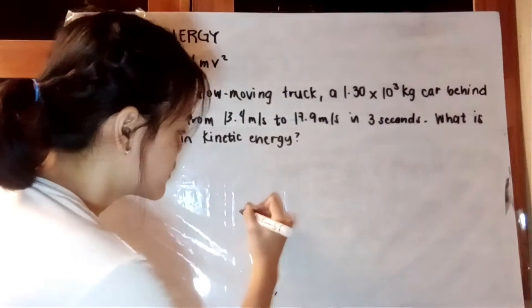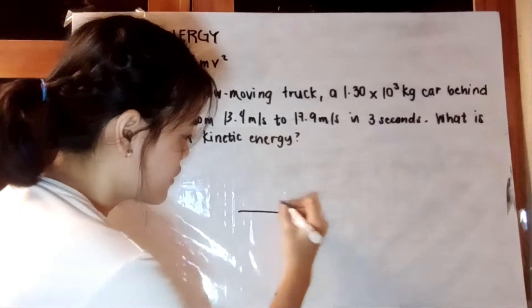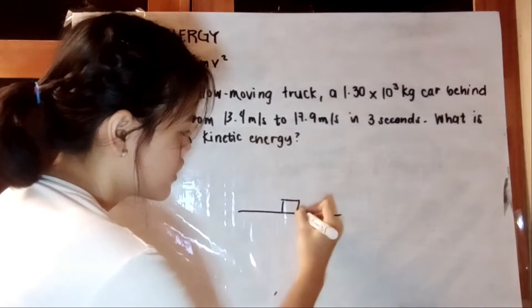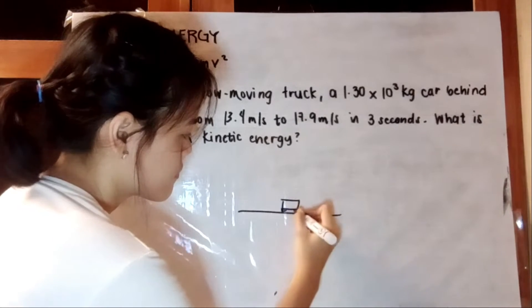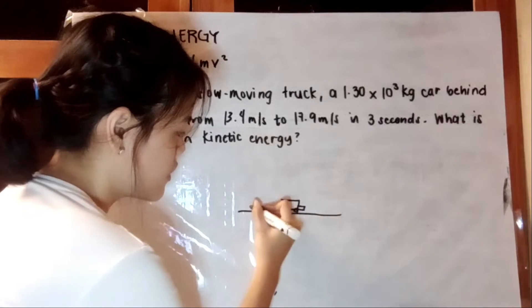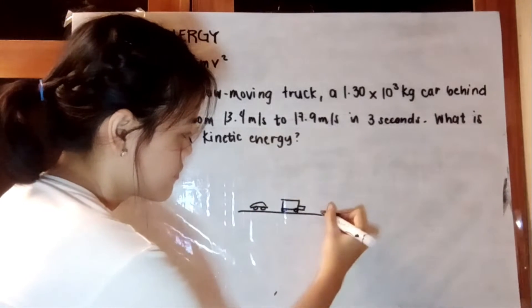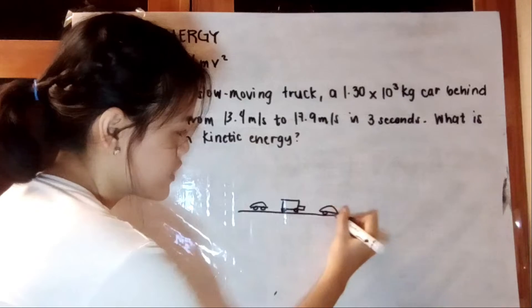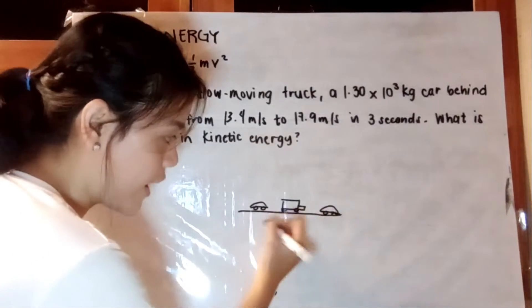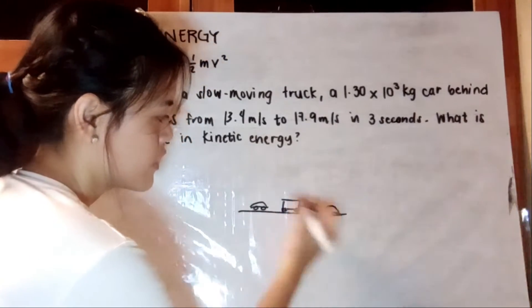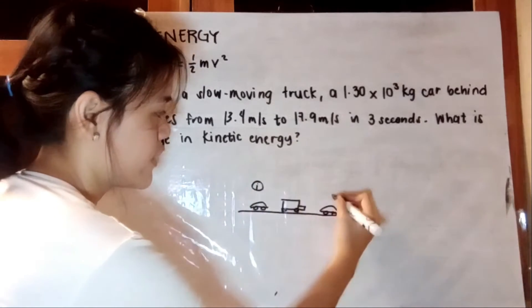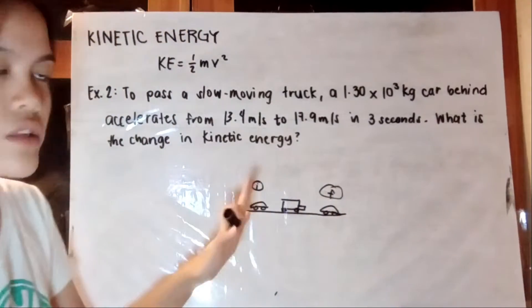So let's say this is the road, we have the truck here, and then this is our car, which accelerates from here behind to here. So this is our initial position, and this is our final position.